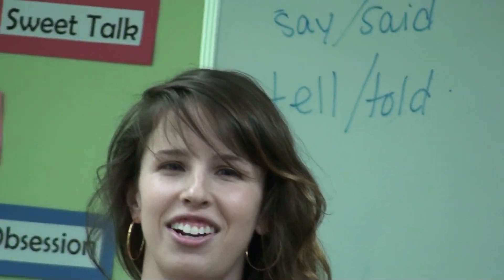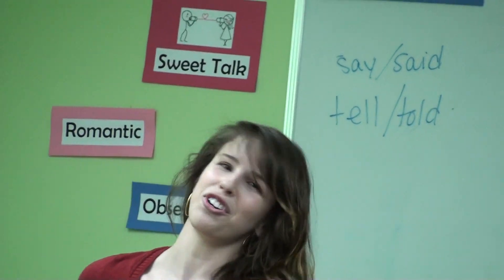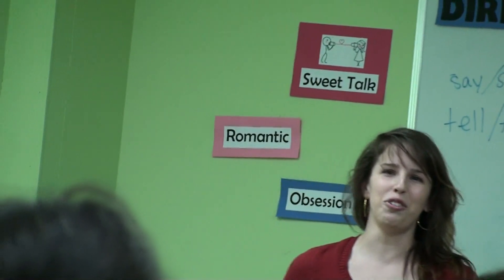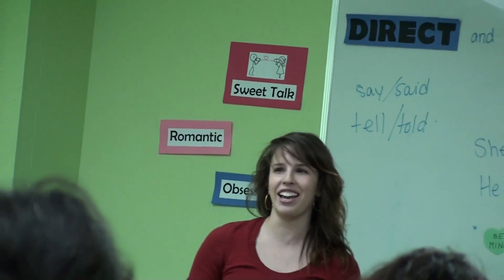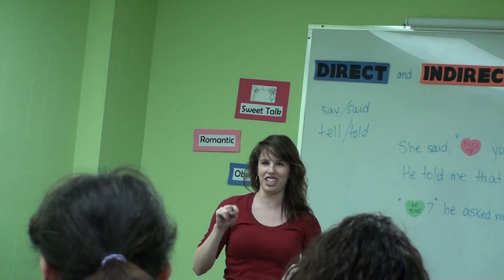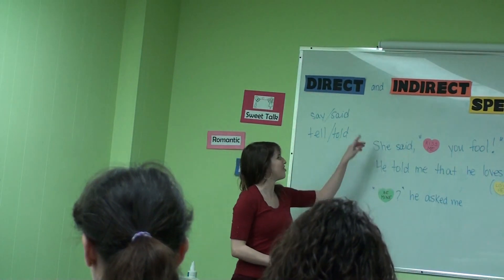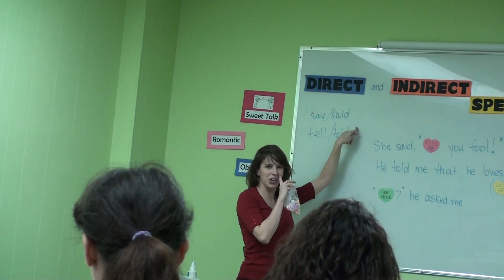Today, we're going to do a fun writing activity. What I'm going to do is give each of you five candy hearts — you can eat them after you're done. What you're going to do is make five sentences, one for each heart, using direct and indirect speech.